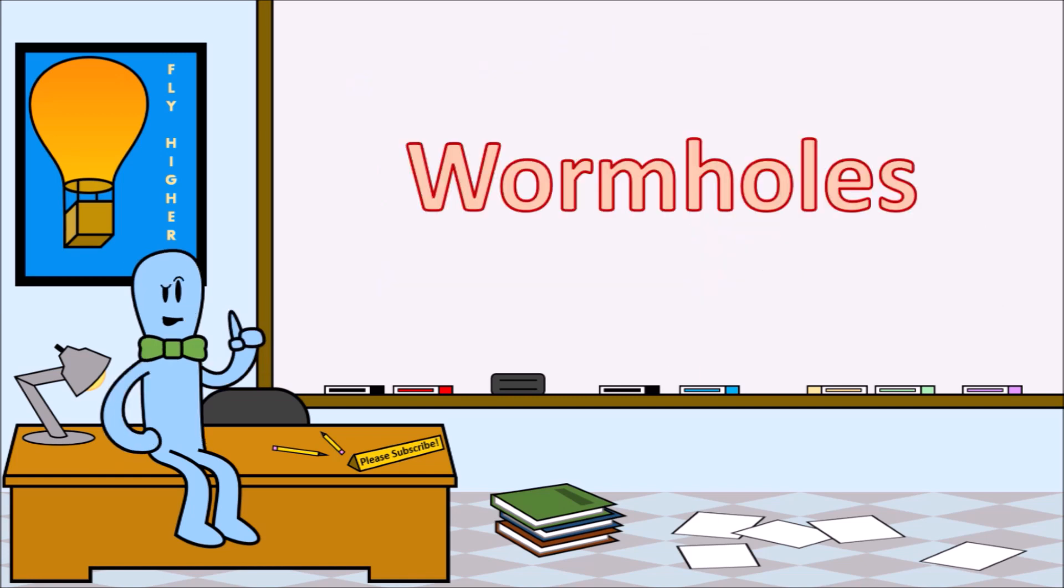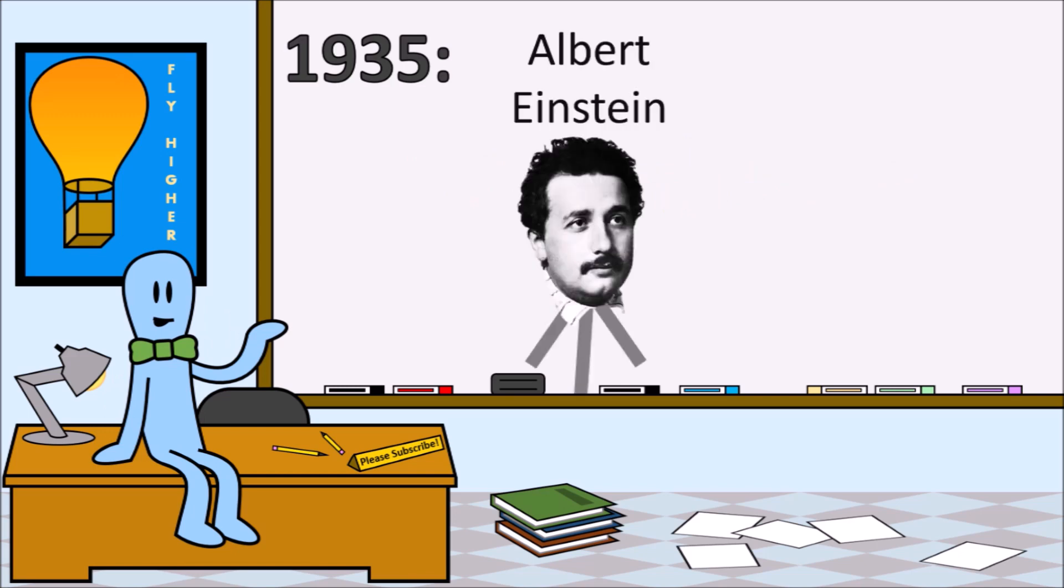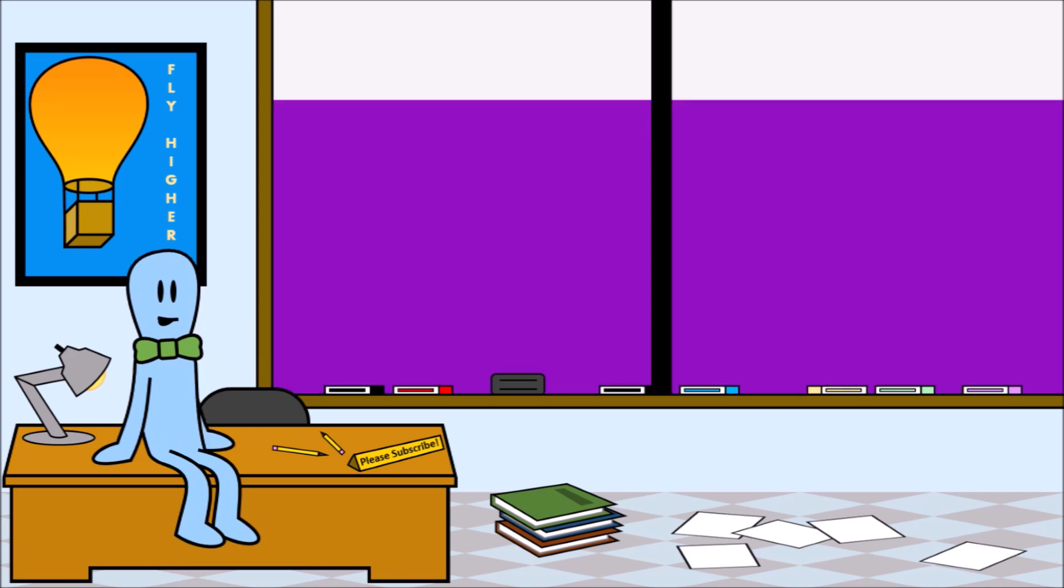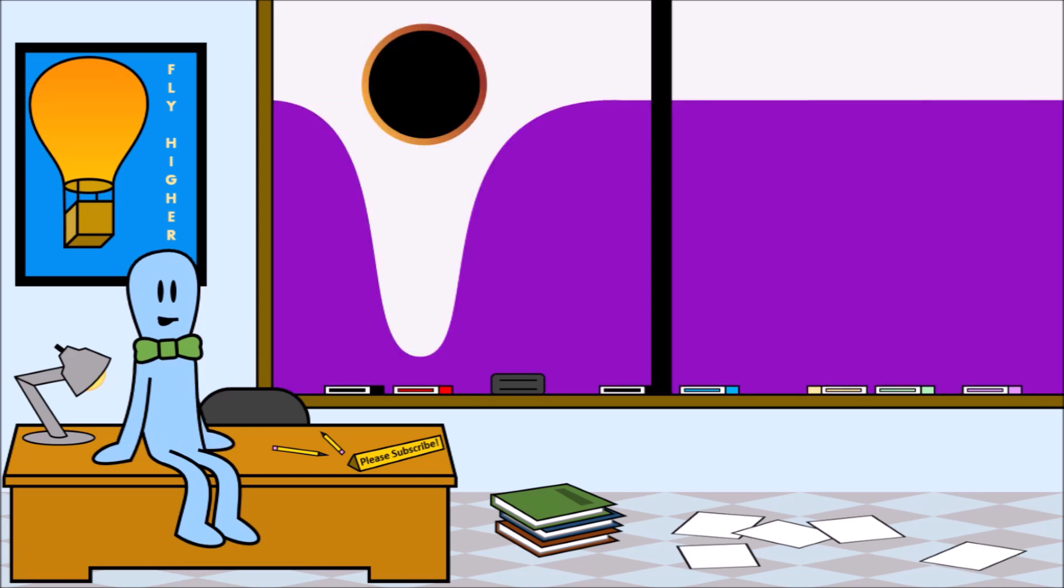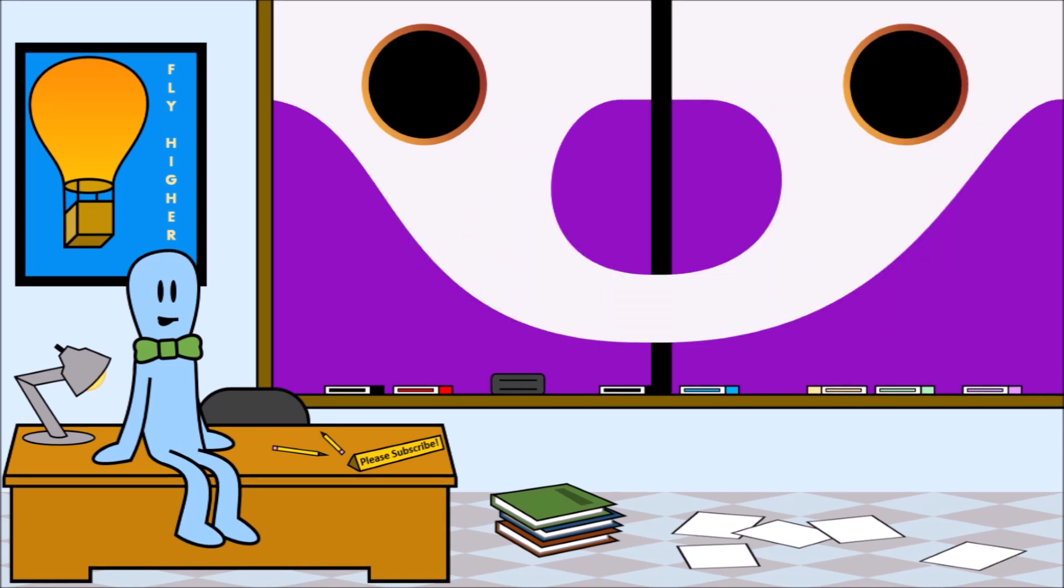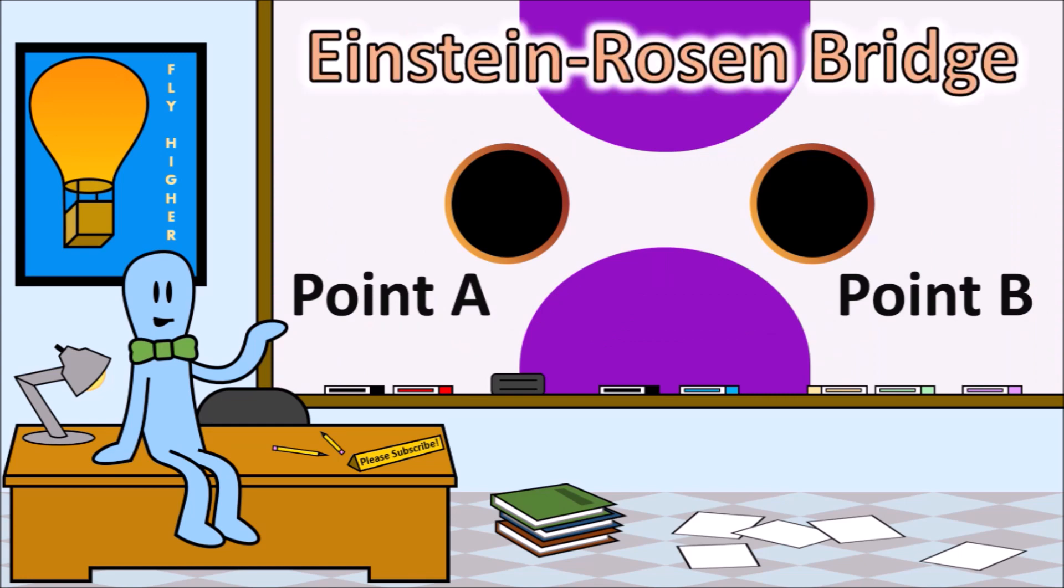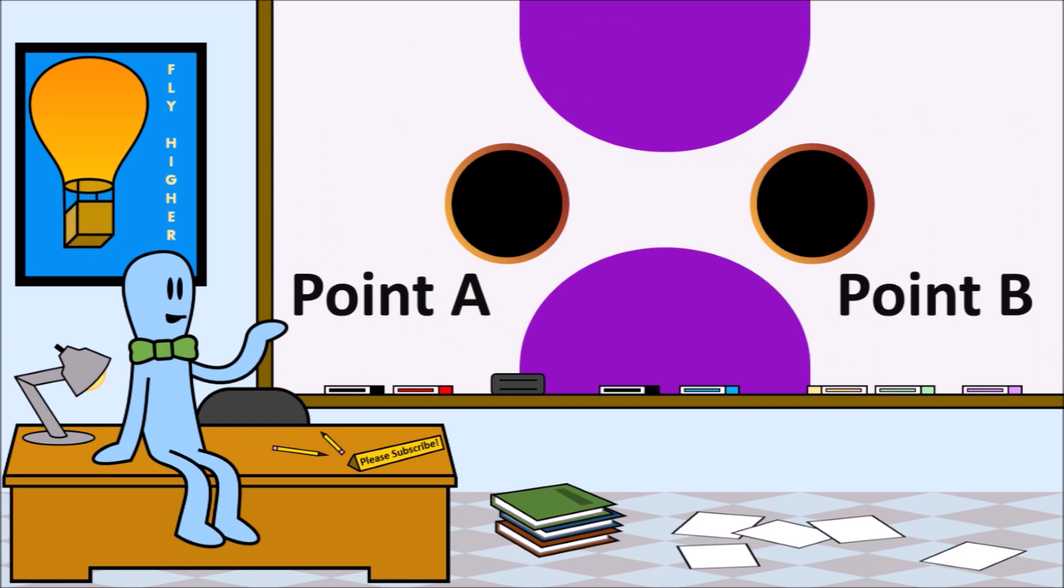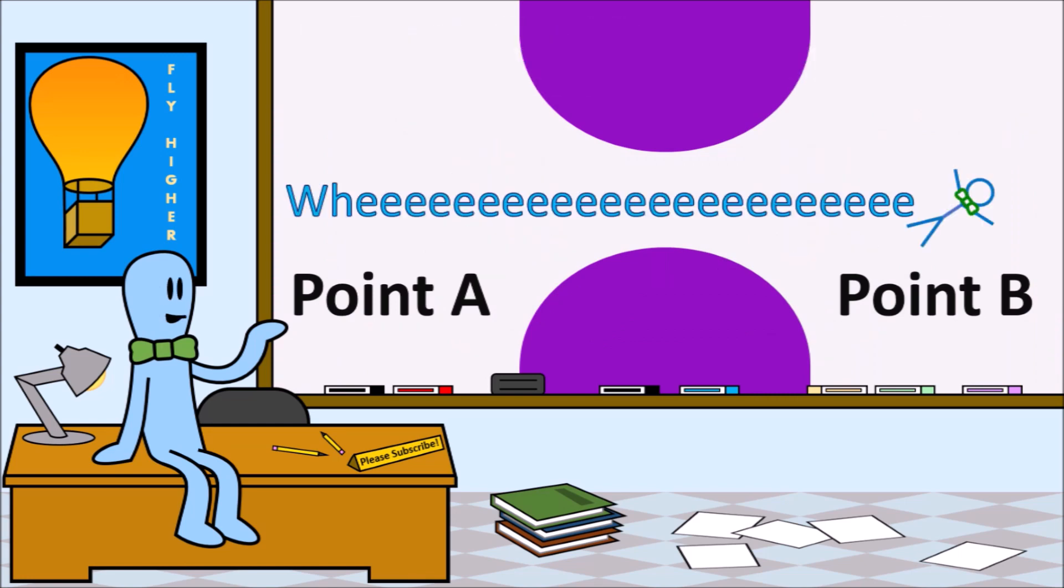Which brings us to wormholes. In 1935, Einstein and his colleague Nathan Rosen thought of a scenario where the space-time terror caused by a black hole connected with the space-time terror of another black hole, connecting the two different points in space-time. This example became known as the Einstein-Rosen bridge. Now take this example, remove the black holes in the way so that we can travel through, and this is what we know today as a wormhole.